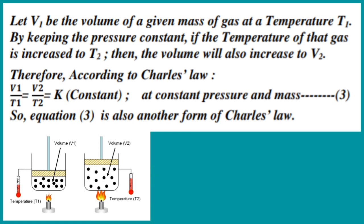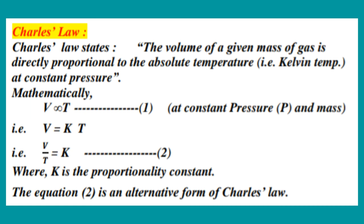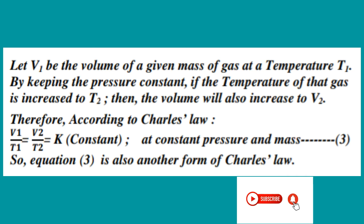Equation number 3 is also another form of Charles's Law. Charles's Law has 3 mathematical forms. The first one is V directly proportional to T temperature. The second one is V by T equal to K constant. And the third mathematical form of Charles's Law is V1 by T1 equal to V2 by T2 equal to K, meaning constant. All these 3 equations of Charles's Law have the same meaning.